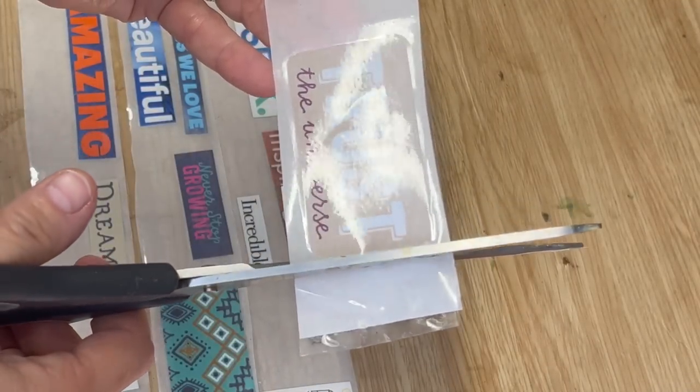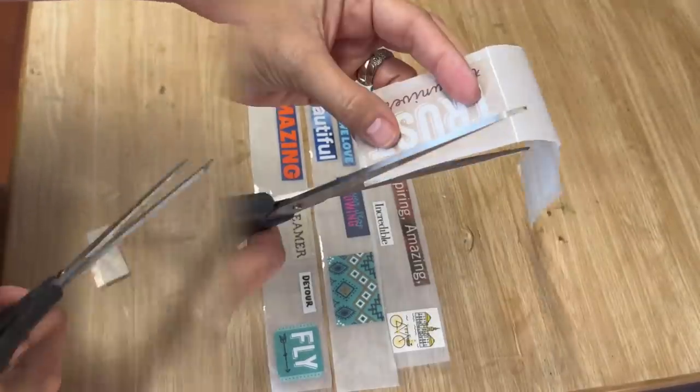Now I'm gonna take a sharp pair of scissors and I'm gonna trim around each piece of paper, leaving a little tiny bit around the edges but making it nice and straight and clean.